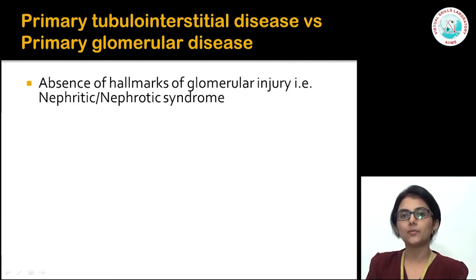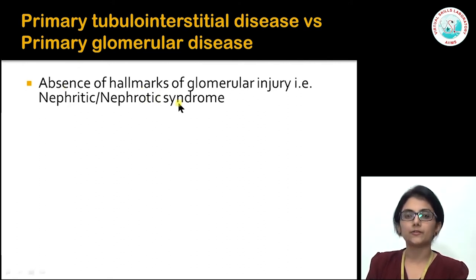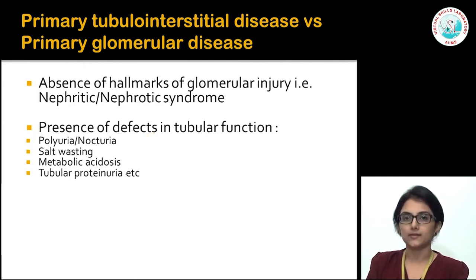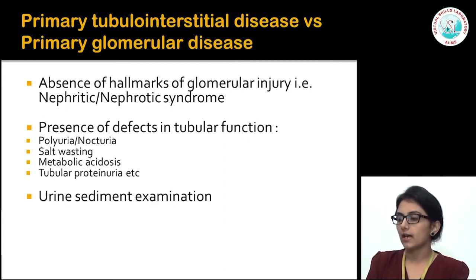It's important for the clinician to determine whether the problem starts from primary glomerular or primary tubular interstitial disease. Features suggesting primary tubular interstitial disease include absence of nephritic or nephrotic syndrome, presence of tubular functional defects such as polyuria, nocturia, salt wasting, and metabolic acidosis. Mild proteinuria of 1+ on dipstick or less than 1 gram on 24-hour urine protein suggests tubular proteinuria. Urine sediment examination also plays a very important role.